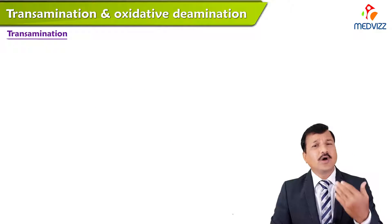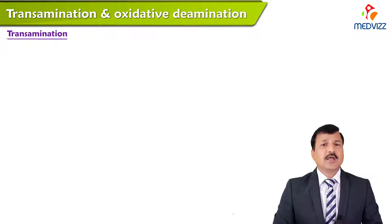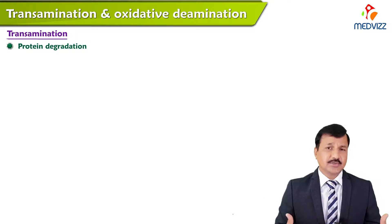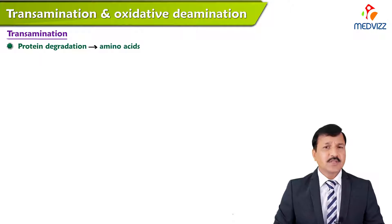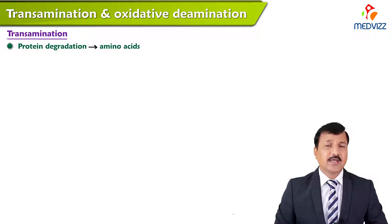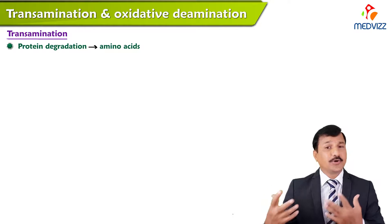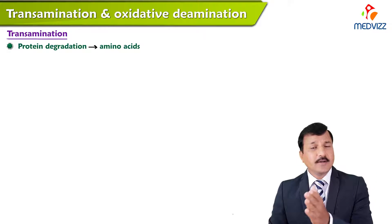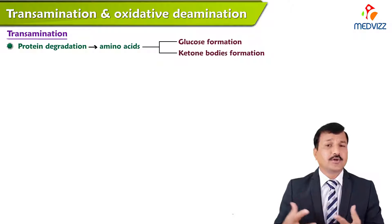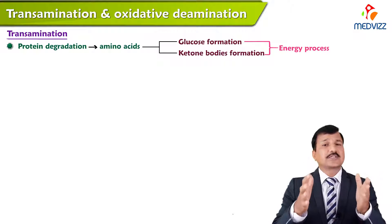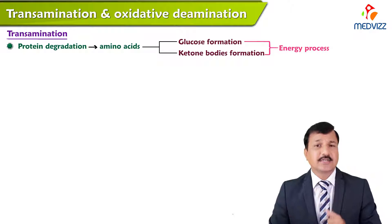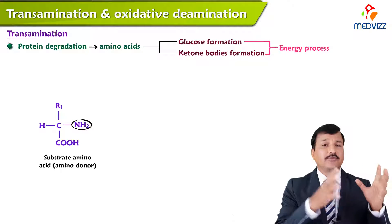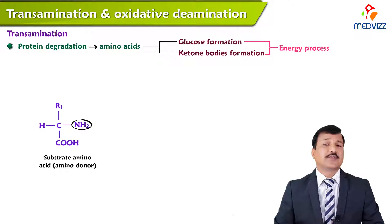What is transamination and why do we need it in the tissue? Whenever a protein is undergoing turnover or degradation in the tissues, it will release amino acids as a product. The amino acids coming from protein degradation, especially when a person is in a catabolic condition and new protein synthesis is not going on, the carbon skeleton of an amino acid has to undergo glucose formation or ketone body formation for energy. The alpha amino group in an amino acid has to be safely transported to the liver and to a certain extent to the kidney for safe handling.